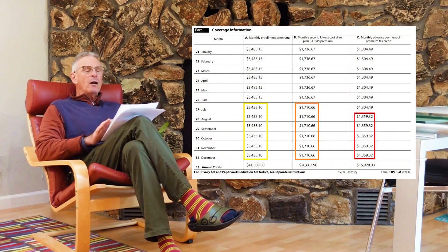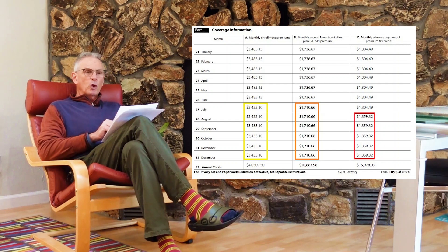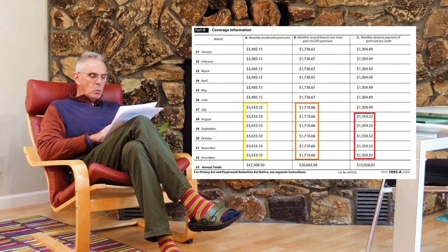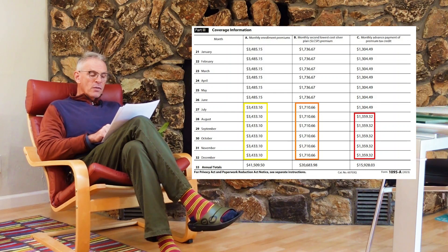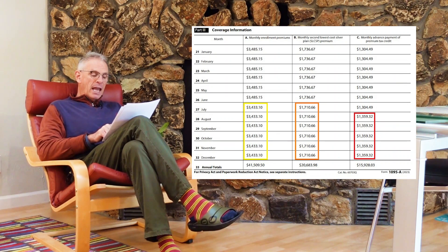Scrolling down on that 1095-A, there's a mass of numbers: 12 different months, annual totals — it can all blur together. But go through it. For this particular family, Column A is the monthly enrollment premiums — the total full premium amount for the health plan everyone was enrolled in. Looking at July, it changed, going down by about $25. Is that correct or incorrect? Column B is the monthly second lowest cost silver plan. That is an important column because the cost of the second lowest cost silver plan is the benchmark — the basis for determining the subsidy. Going through that column, we see that in July it also decreased by about $26. Correct or incorrect?